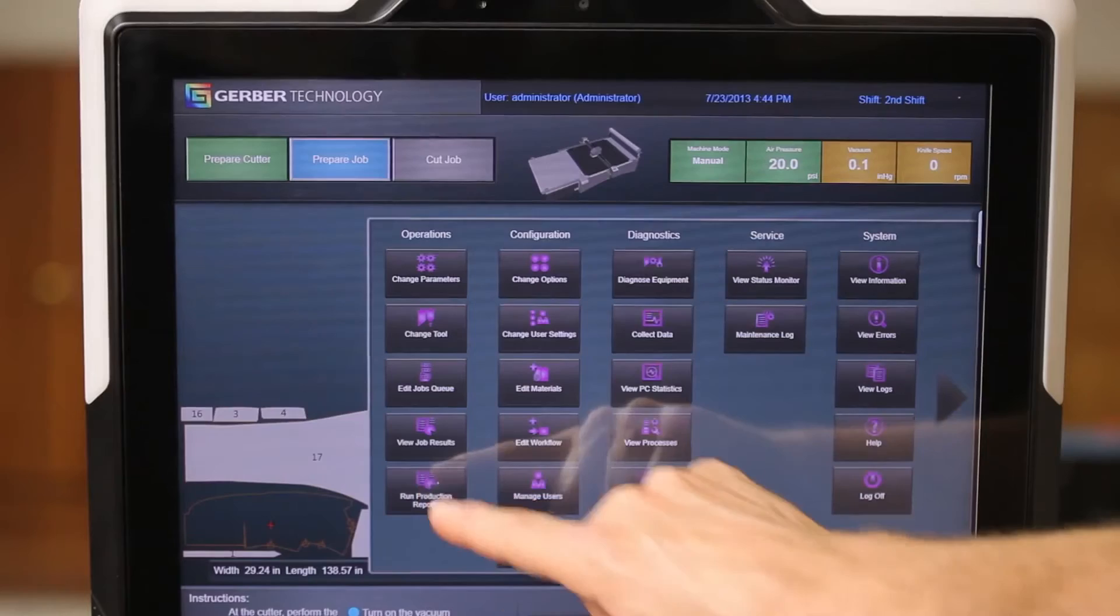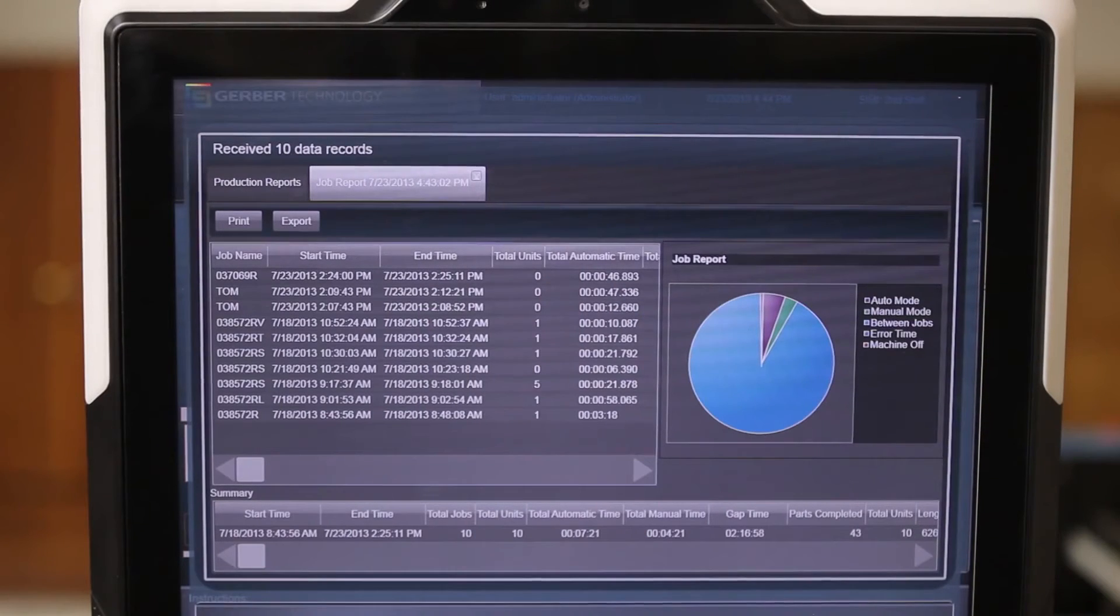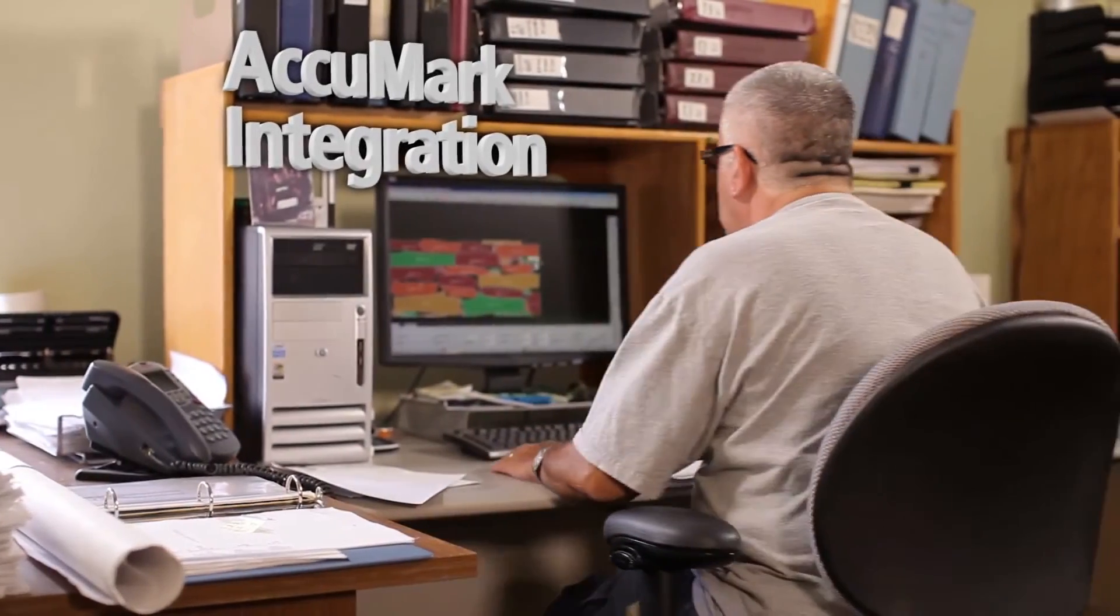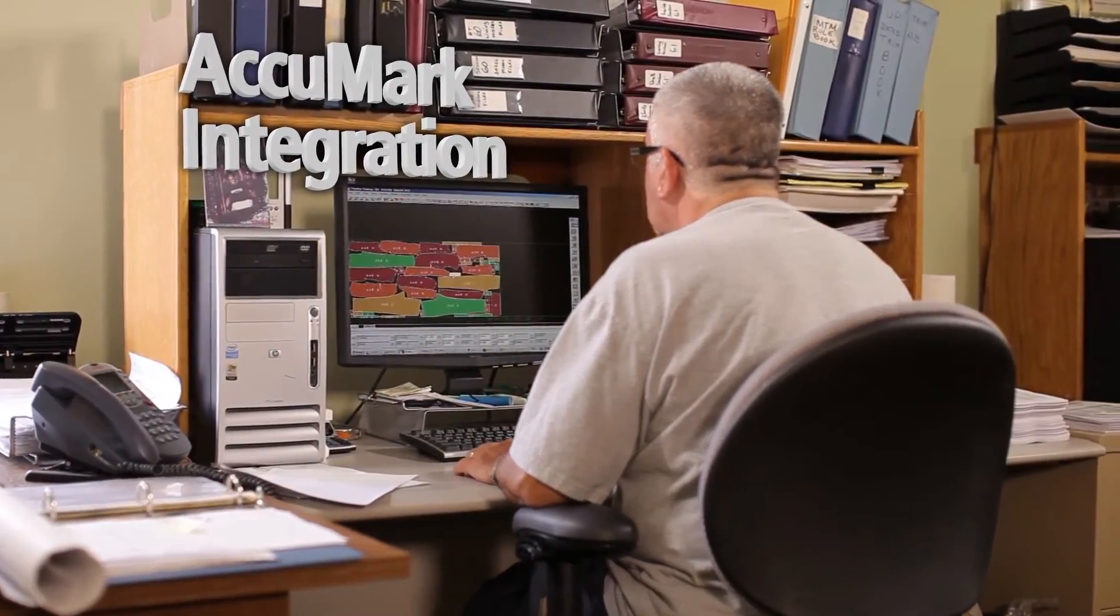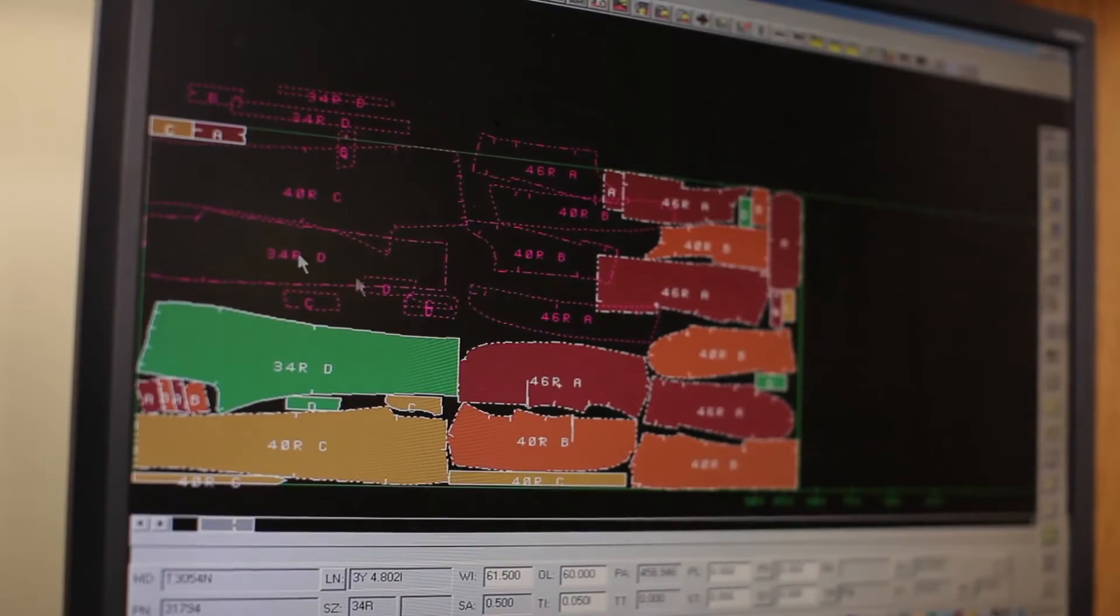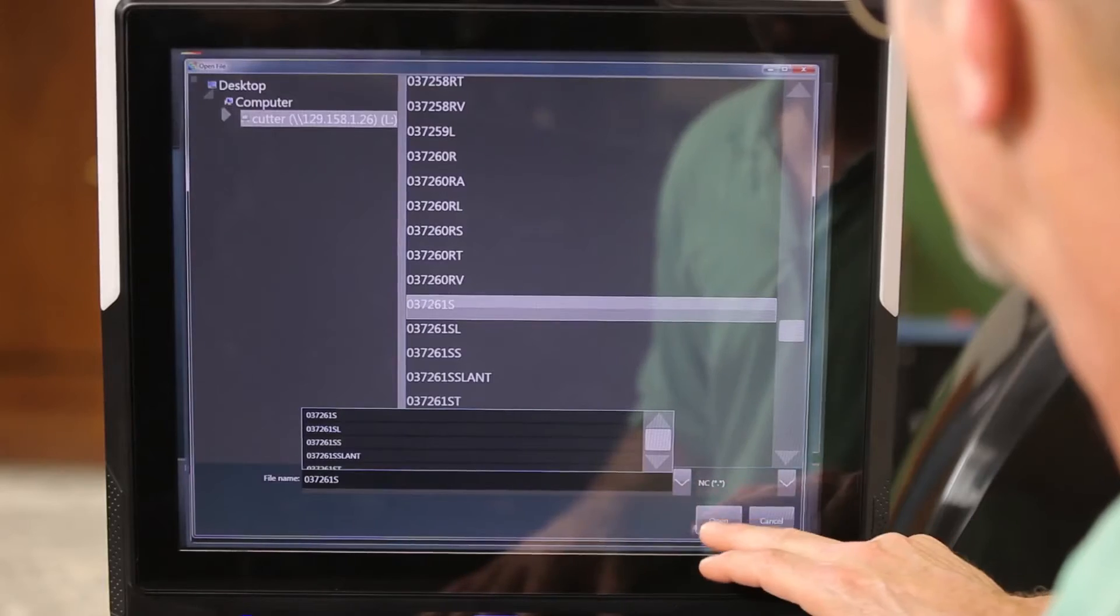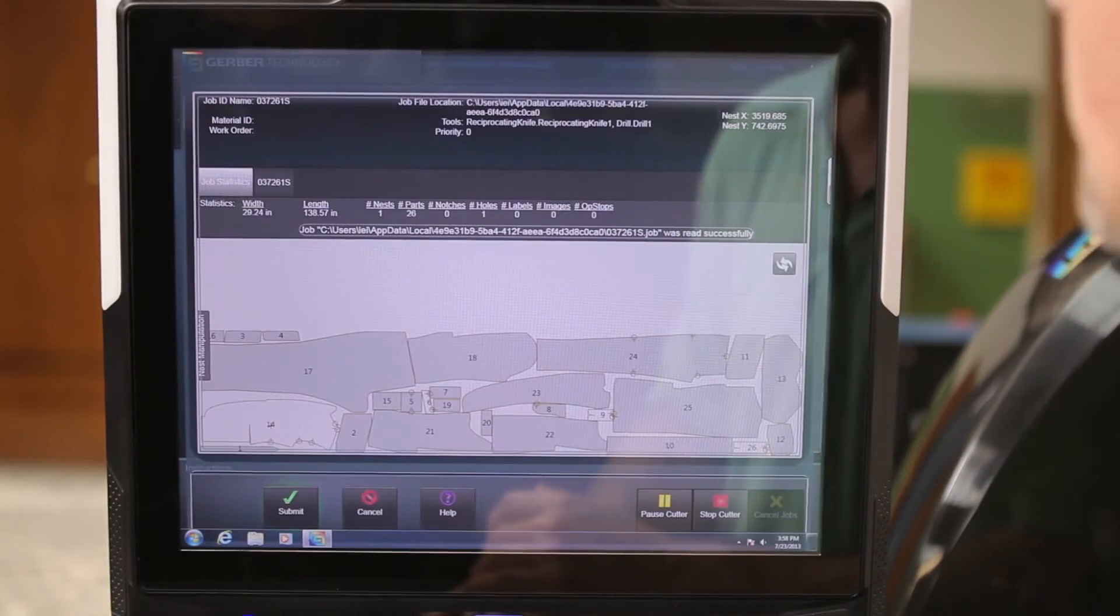This gives managers access to critical data that helps them eliminate inefficiency in the process. Paragon's integration with Gerber's Acumark CAD and automated spreading systems means even more time savings. Simply input a work order in Acumark and it calculates the optimal spread and cut plan.